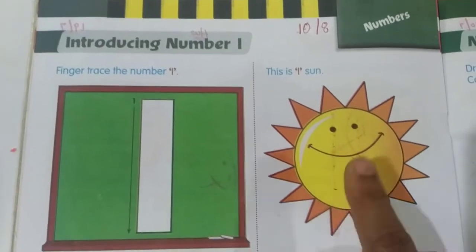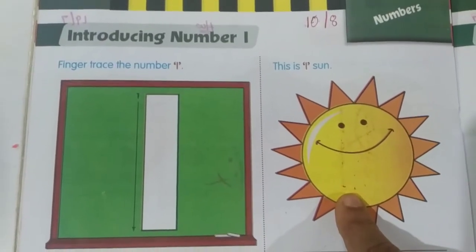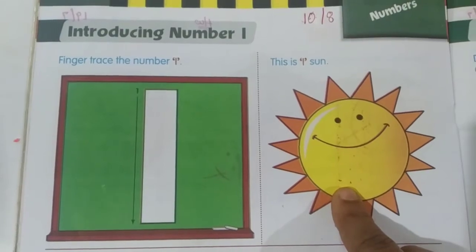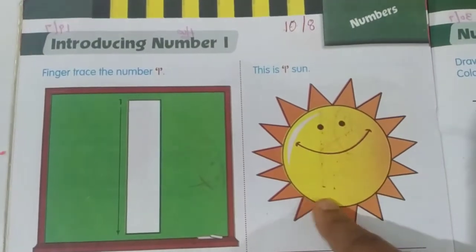Why are numbers used? Numbers are used to count. How many objects are there? So how many suns are there?